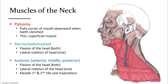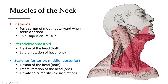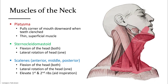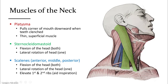We can see the area the platysma covers. As the platysma is so thin, it's rarely dissected on a cadaver, as the muscles beneath are more important for movement of the head and neck. The sternocleidomastoid muscle starts from the mastoid process of the temporal bone and splits into two heads as it descends, attaching to the medial part of the clavicle and the manubrium of the sternum. When one side is activated, it causes the head to turn toward that side; when both sides are activated, it causes the head to flex forward.